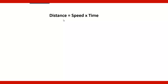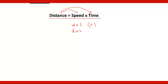Right from the lower classes we are studying the formula that distance is equal to speed into time. Distance is directly proportional to speed provided time is constant. And distance is also directly proportional to time provided speed is constant.